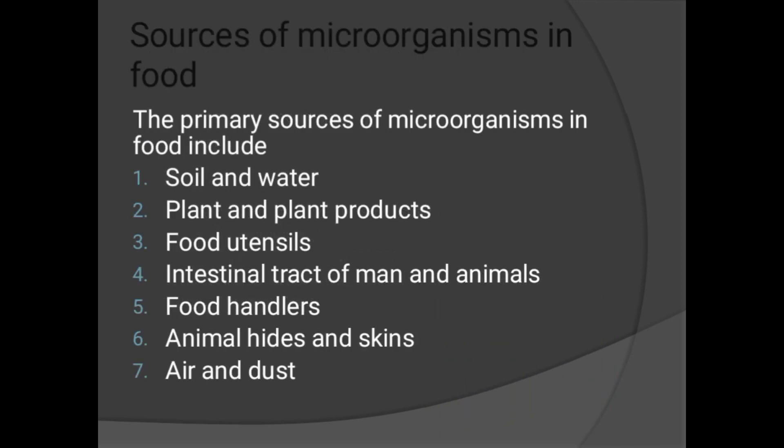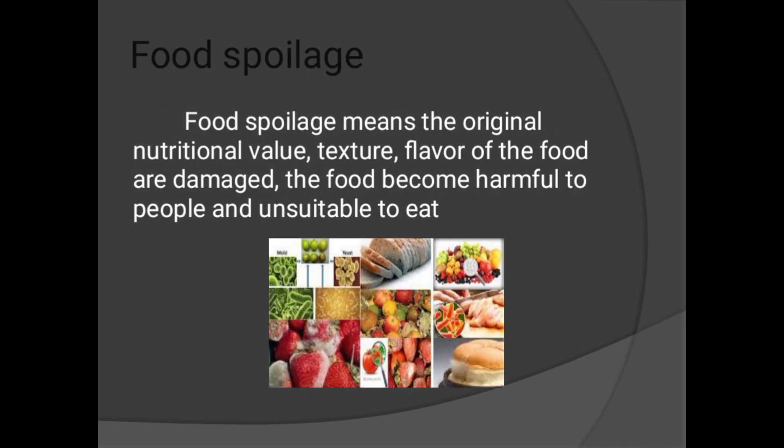Sources of microorganisms in food: The primary sources include soil and water, plant and plant products, food utensils, intestinal tract of man and animals, food handlers, animal hides and skins, and air and dust.